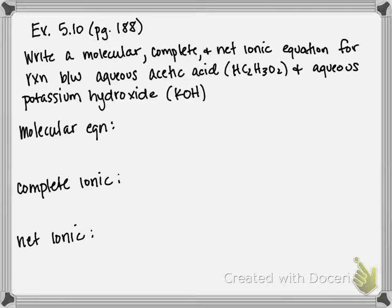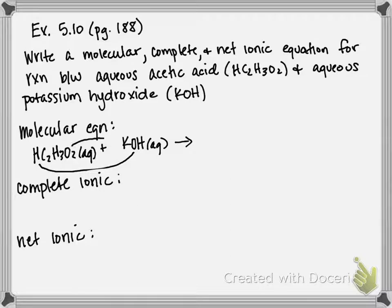Acetic acid has the formula HC2H3O2, and that's combining with potassium hydroxide. If we're swapping partners, the H of my acid goes with the OH of my base to form water, and then the anion of my acid goes with the cation of my base to form a salt. So I'm going to be producing KC2H3O2.